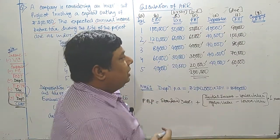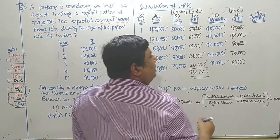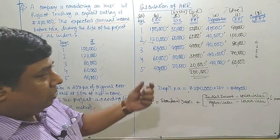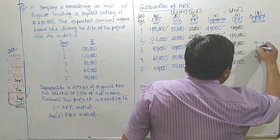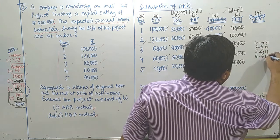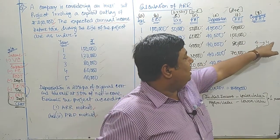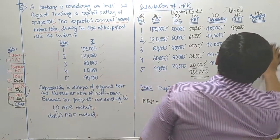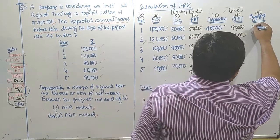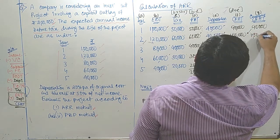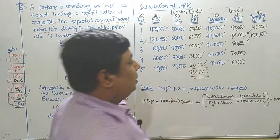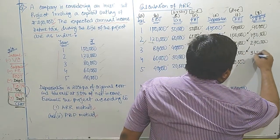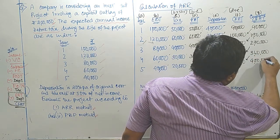We are going to calculate the cumulative CFAT column. Cumulative CFAT means accumulating the column progressively: first year it remains the same, then you add the next year's figure, and so on. Here: first year 90,000; second year 90,000 plus 1 lakh is 1 lakh 90,000; third year 1 lakh 90 plus 80,000 is 2 lakh 70,000; fourth year 2 lakh 70 plus 70,000 is 3 lakh 40,000; fifth year 3 lakh 40 plus 60,000 is 4 lakhs.